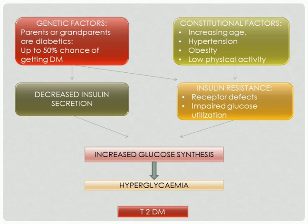Decreased insulin secretion also accounts for diabetes mellitus. These factors contribute to increased glucose synthesis in the body. If the cells cannot utilize glucose, then they utilize non-carbohydrate sources — proteins and fat — for producing ATP. That is called gluconeogenesis. The glucose will be synthesized from other non-carbohydrate sources. That all ends up in increased blood sugar level, which is hyperglycemia. The constant or prolonged increase of glucose in the blood accounts for type 2 diabetes mellitus.